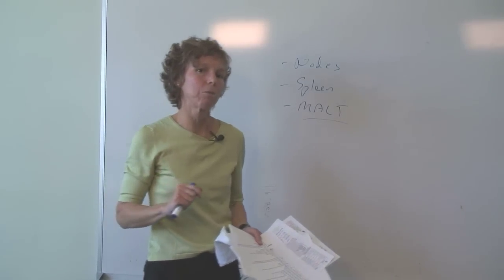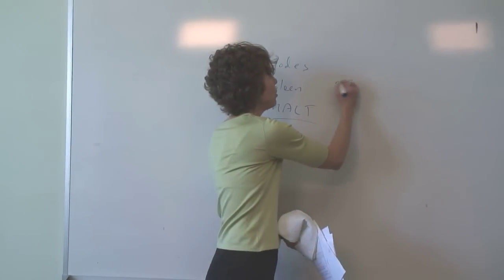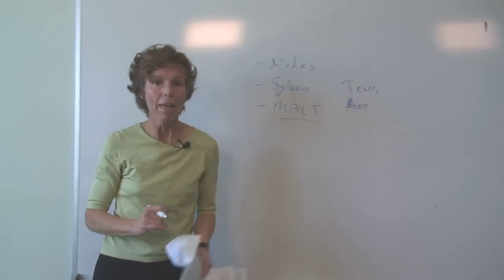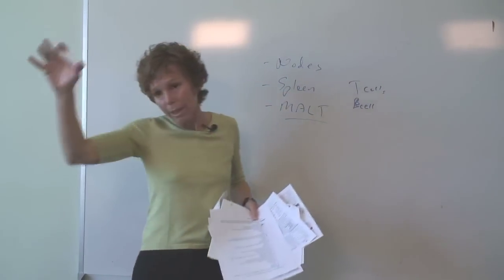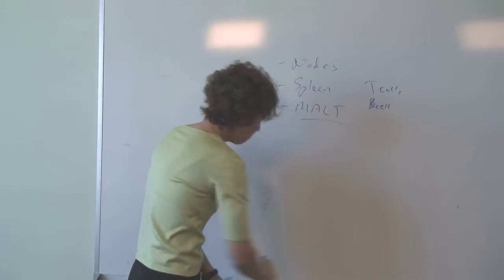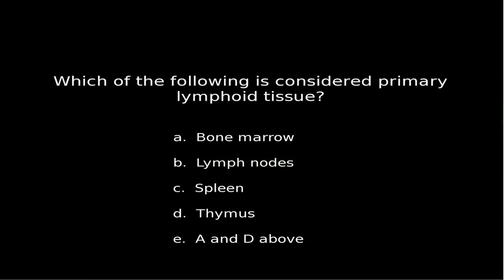In terms of cell development: the bone marrow produces both myeloid cells — neutrophils, phagocytes — and lymphocytes (B and T cells). T cells are unique in that they don't become fully functional until they go to the thymus for maturation. So the answer to question six is bone marrow and thymus — both are primary lymphoid tissue. Lymph nodes and spleen are secondary. These are low-hanging fruit that they like to test.